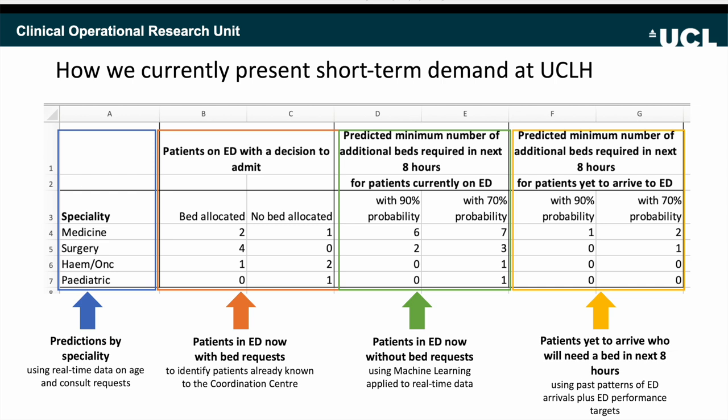You can see here the output that our application currently generates. There's a breakdown by specialty: we separate out the patients they already know about — those who have a decision to admit — in columns B and C by specialty. Then in columns D and E we have a predicted minimum number of additional beds needed in the next eight hours for patients currently in the department, and in columns F and G the predicted minimum number of beds needed for patients yet to arrive. In this talk I'm going to explain each of these elements in more detail.